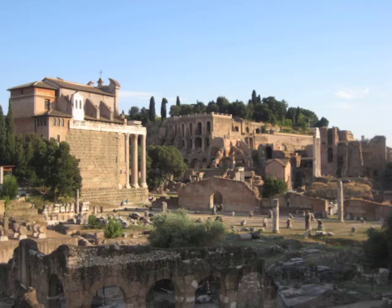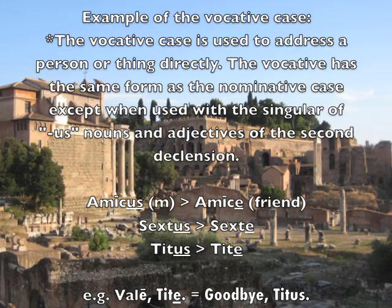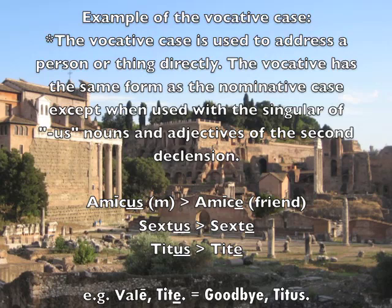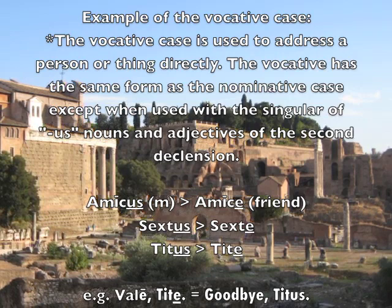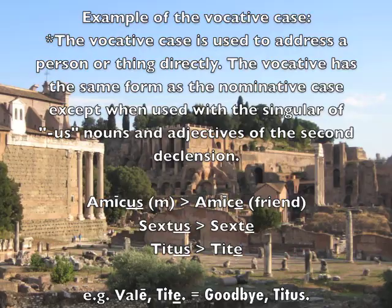Example of the vocative case. The vocative case is used to address a person or thing directly. The vocative has the same form as the nominative case, except when used with the singular of -us nouns and adjectives of the second declension — the -us changes to -e. So amicus becomes amice, Sextus becomes Sexte, Titus becomes Tite. In the dialogue we saw the example: vale, Tite — goodbye, Titus.